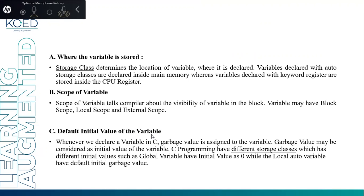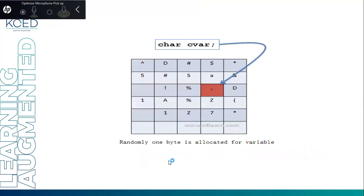Default initial value of the variable: whenever we declare a variable in C, a garbage value is assigned to the variable. Garbage value may be considered as an initial value of the variable. C programming has different storage classes which have different initial values — such as a global variable, which has an initial value of zero, while a local variable or auto variable has the default initial value of garbage value.